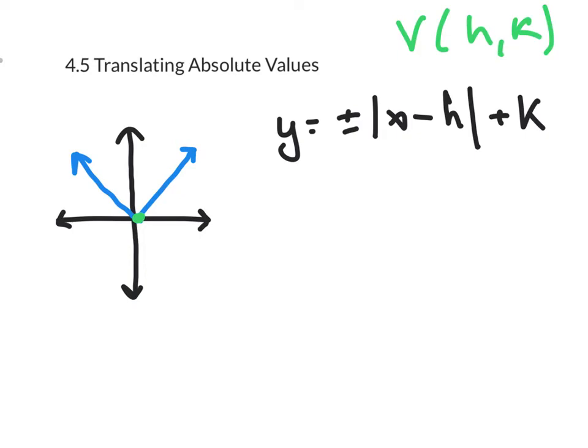the vertex is at 0, 0. In our case, it's going to be at h, k. It could be any two numbers.